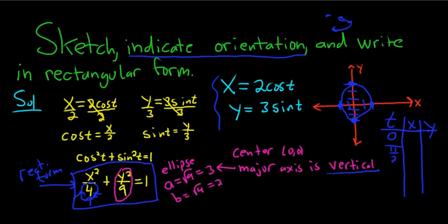Those are easy numbers. So if you plug in 0 here, you're going to get x equals 2 times cosine of 0. Cosine of 0 is 1, so you get 2. And y equals 3 times sine of 0. Sine of 0 is 0. So when t is 0, you get x equals 2 and y equals 0. So you get 2, 0.